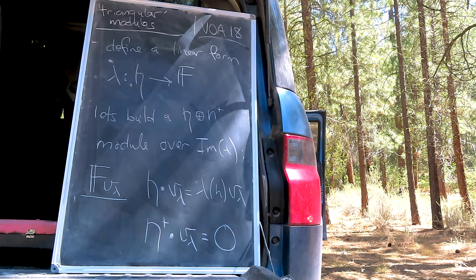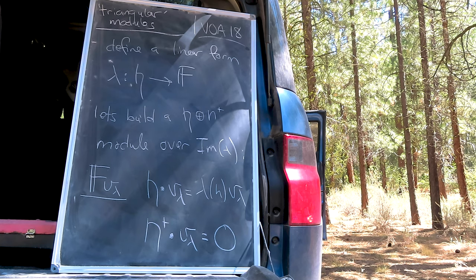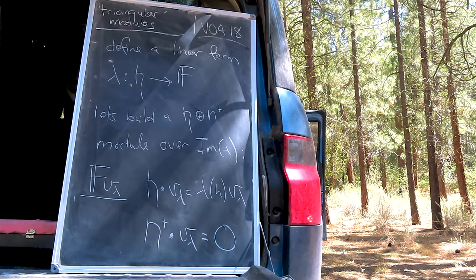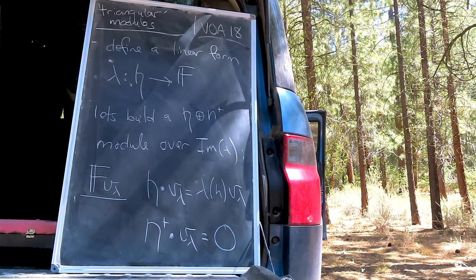To define the module, we now specify the H plus N plus action over F. The action of H on V lambda amounts to scalar multiplication by its image in lambda. And, as usual, N plus annihilates the vacuum.